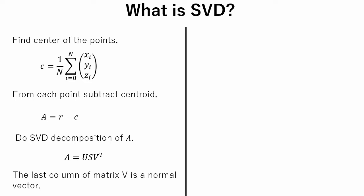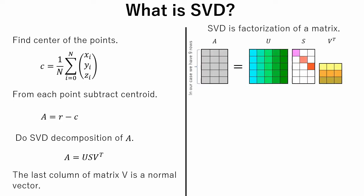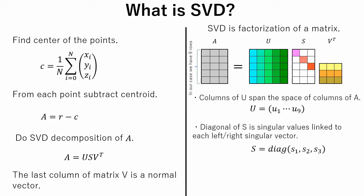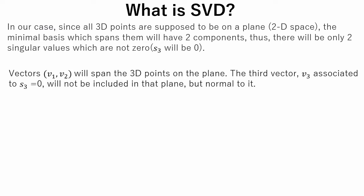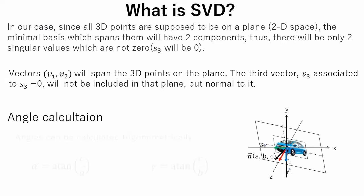Let's take a closer look at what SVD is. SVD is a factorization of a matrix. Columns of U span the space of columns of A. The diagonal of S contains singular values linked to each left or right singular vector. Columns of V span the space of rows of A. In our case, since all three-dimensional points are supposed to lie on a plane, the minimal basis spanning them will have two components — thus, only two singular values will be non-zero. Vectors V1 and V2 span the 3D points on the plane, while the third vector V3, associated with S3, is normal to that plane. Angles can then be calculated trigonometrically.